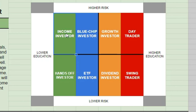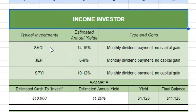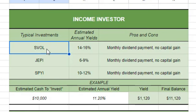The income investor is a little bit higher risk than the hands-off investor and knows a little more about the stock market. They want to achieve more than just inflation-beating interest rates. The income investor is going to be investing in ETFs such as SVOL, JEPI, and SPYI. I'll go over each individual ETF on their webpage and look at the stock market information on Seeking Alpha. Right now, the annual yield estimated for SVOL is between 14 and 16%.